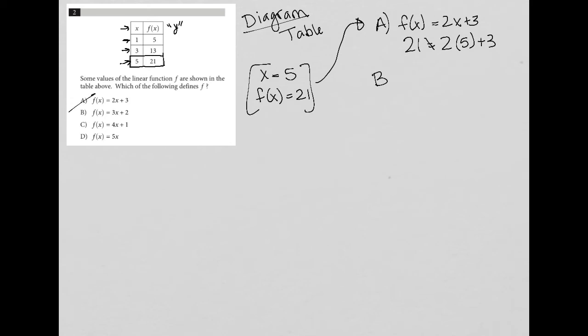I try the same thing with choice B. And again, I'm just rewriting this for clarity on this side. You would not need to rewrite the answer choices. You can just go straight to plugging things in. But for choice B, right, I'm replacing f of x with 21, replacing x with 5. All right, so that becomes 3 times 5 is 15 plus 2 is 17. So that's also not equal to 21. So B is gone.